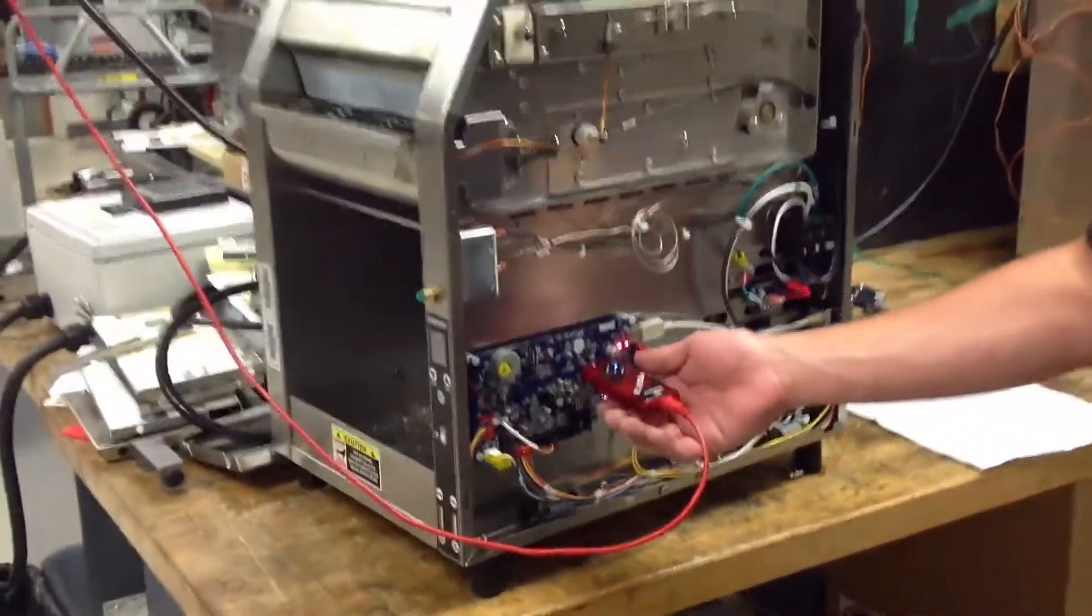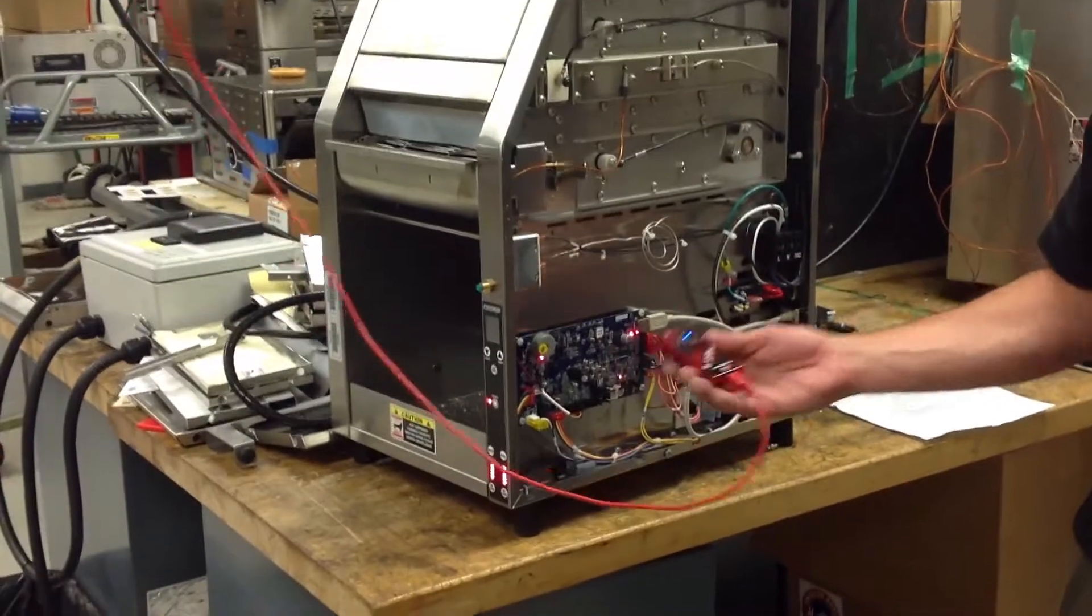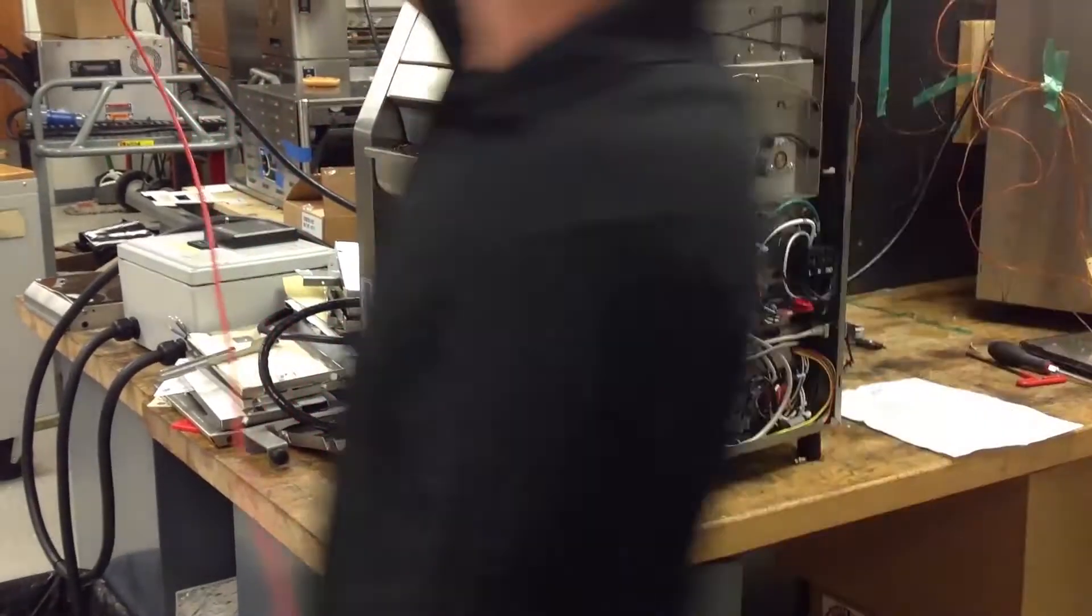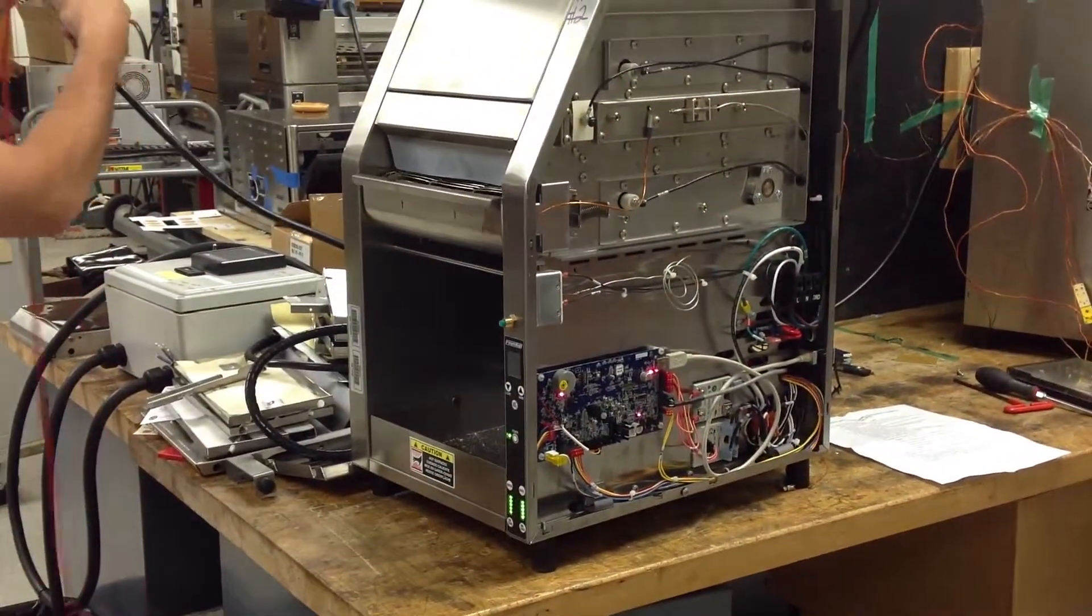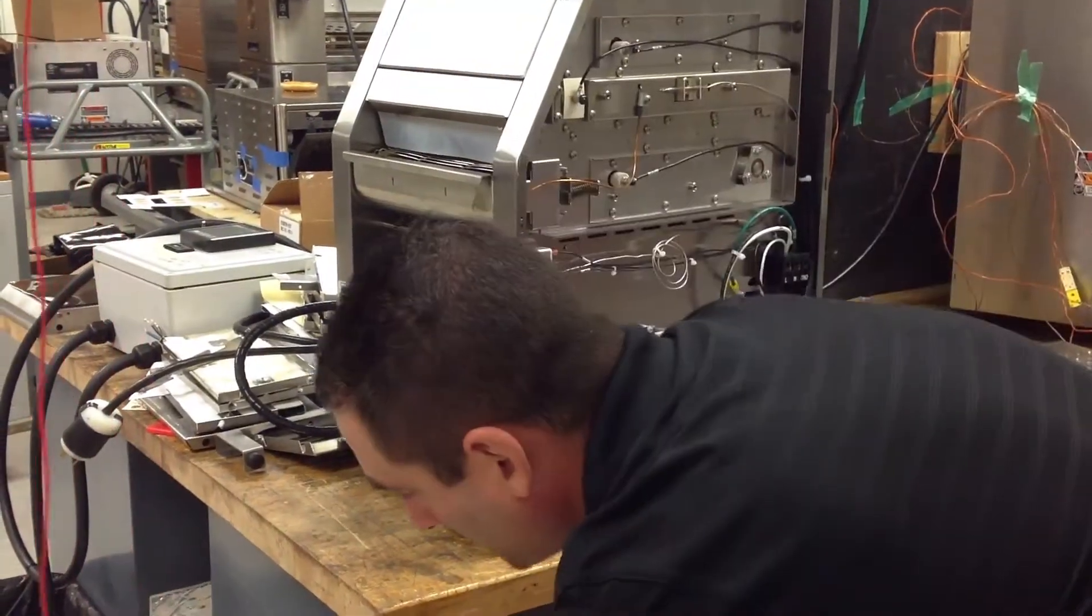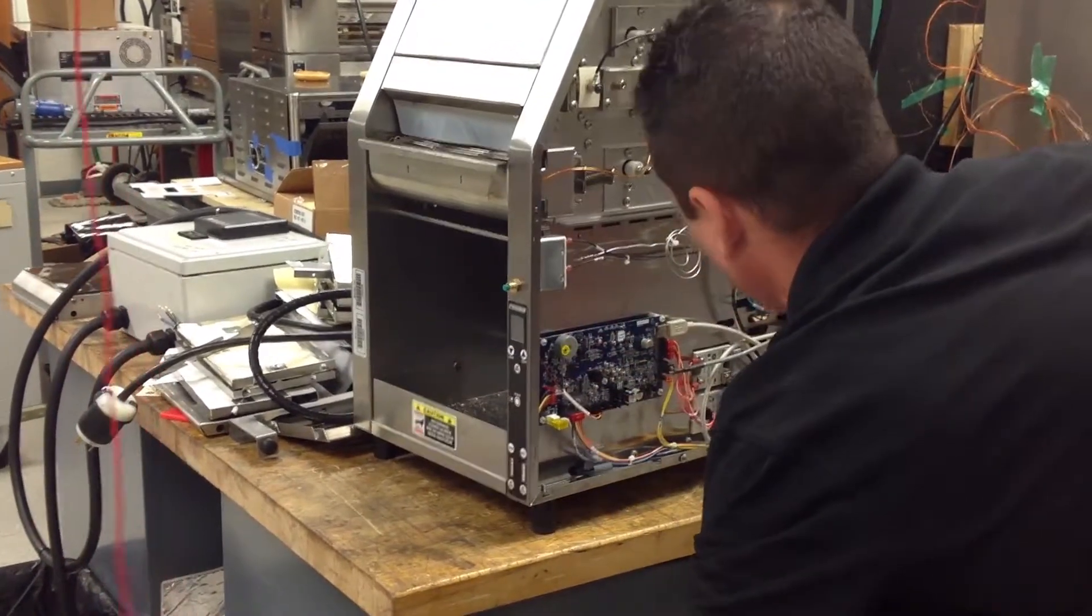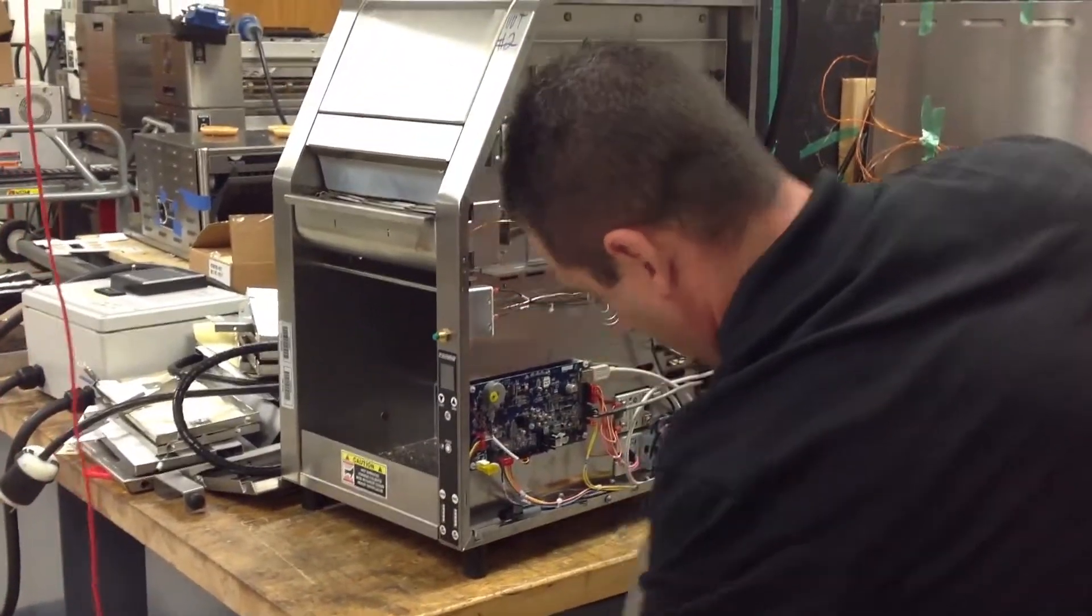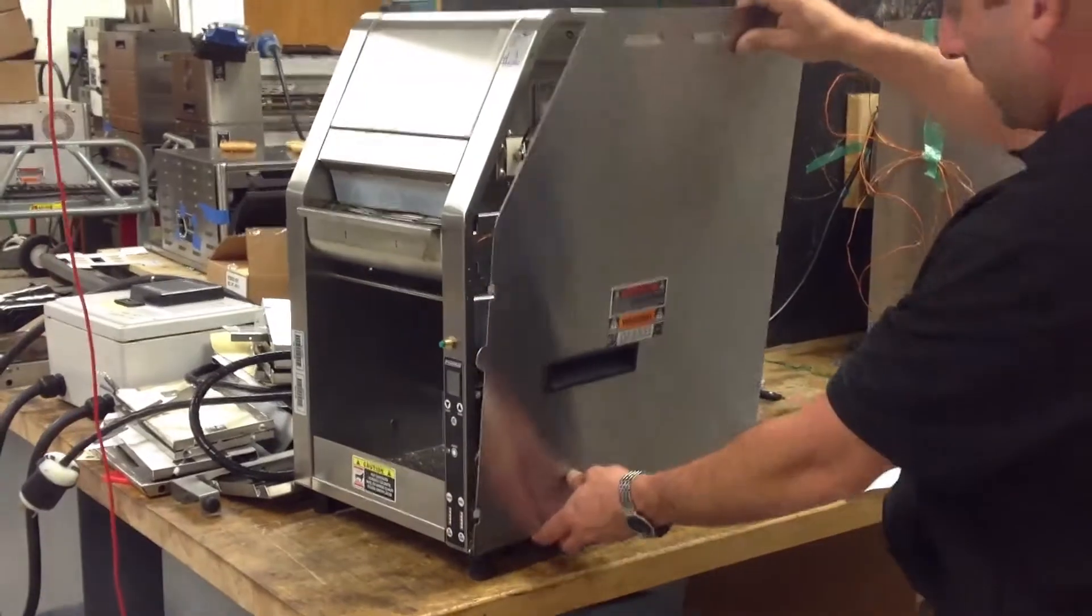Once it's green, that indicates the upgrade is finished. Unplug the picket, remove power from the toaster, and put the side panel back on.